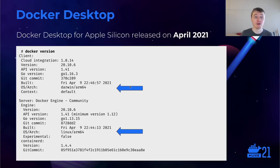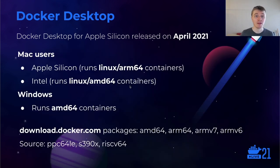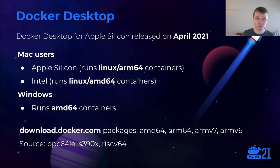Let's talk about how to use Docker Desktop when you're not on x86. The biggest update here is that in April we released Docker Desktop for Apple Silicon. When you go to download it, you have an option to get the Apple Silicon version or the Intel version. The Intel one runs AMD64 containers, while the Apple Silicon one runs Linux ARM64 containers by default. Windows still runs AMD64 containers. If you're on Linux, you can get the Docker packages directly for a bunch of other architectures as well.